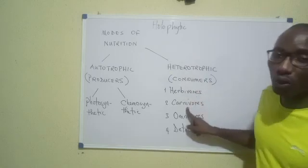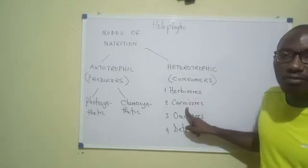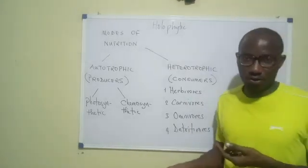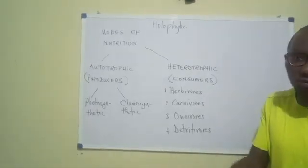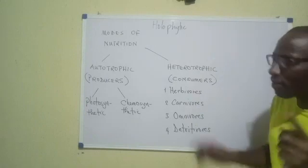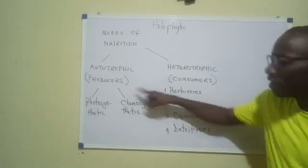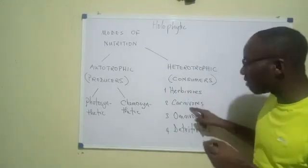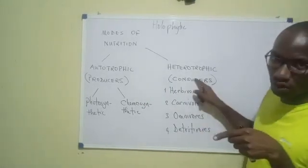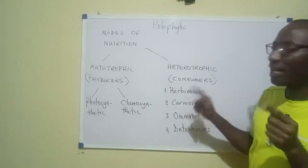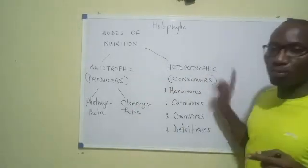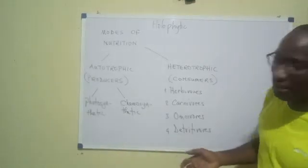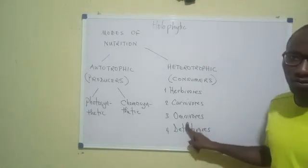Then we have another group called the carnivores. Carnivores are heterotrophs that feed on fellow heterotrophs — animals that feed on flesh, animals that feed on fellow animals. Remember, no animal is an autotroph, so if carnivores feed on fellow animals, it means carnivores feed on fellow heterotrophs. Then there are some other heterotrophs that can feed both ways — they can feed on autotrophs and on heterotrophs, feeding on virtually anything. We call them omnivores.